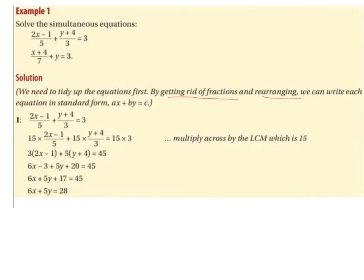Starting with (2x minus 1) over 5 plus (y plus 4) over 3 equals 3. We have 5ths and 3rds, and the lowest common multiple of 5 and 3 is 15. So 15 is the LCM, and we're going to multiply across by 15.